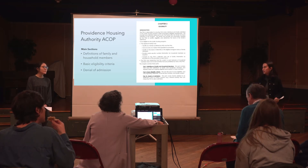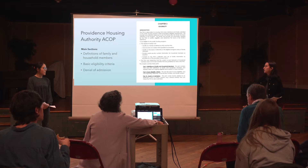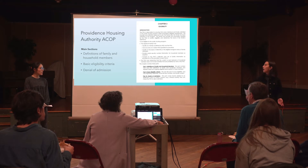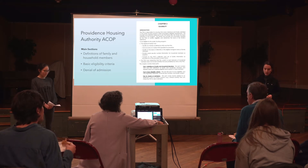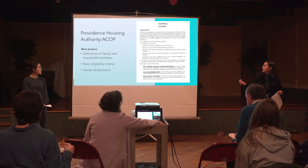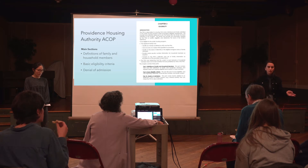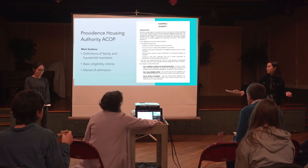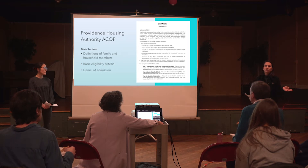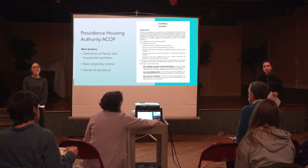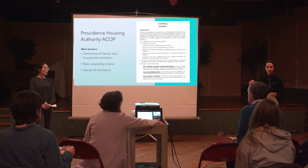You can see the three main sections, which are pretty consistent across all TSPs: the definitions of family and household members, basic eligibility criteria, and denial of admission. That denial of admission section is where we focused. TSPs can range in detail and size — some we looked at were five or six pages, others around 60 or 70, and this particular one was 40. There's definitely a lot of variation in the content, despite having the same main sections.